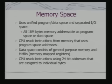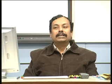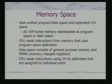The CPU reads instructions using program space addresses. Data space consists of general-purpose memory and memory mapped registers (MMRs). MMRs are on-chip memory locations considered as memory mapped registers — similar to the concept of PIC registers where the register bank itself is RAM. The CPU reads instructions using 24-bit addresses assigned to individual bytes, so the addressing capability is 2^24, and this is again a byte-addressable processor.